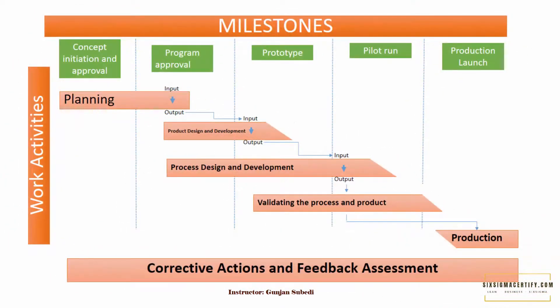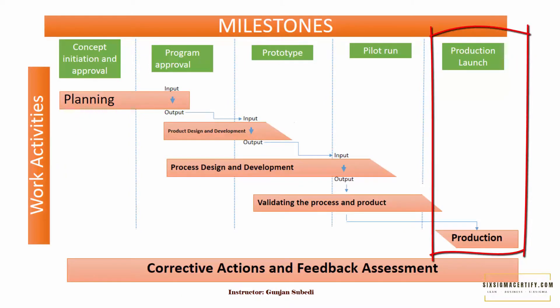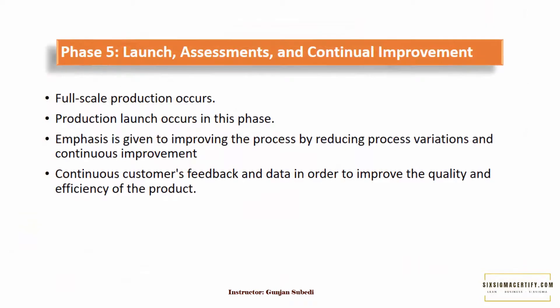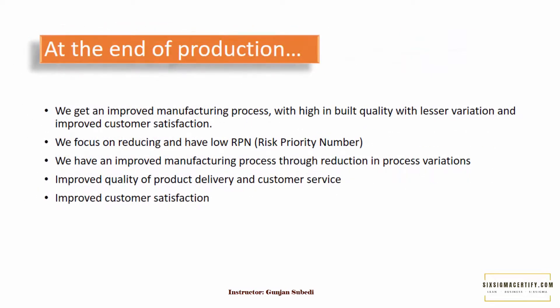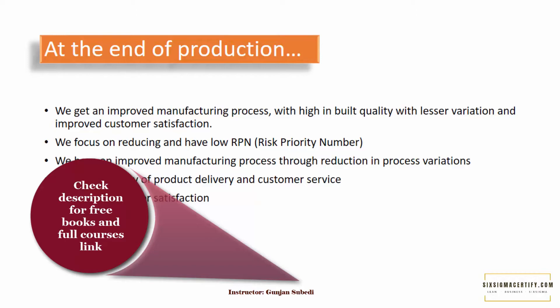Phase 5 is the phase for launch, assessments, and continuous improvement. After all activities are over, the full-scale production launch occurs in this phase. Emphasis is given to improving the process by reducing process variance and continuous improvement. We also give emphasis to collecting customer feedback and data in order to improve the quality and efficiency of the product. After completing this phase, we have an improved manufacturing process with high built-in quality, lesser variation, and improved customer satisfaction. The quality tools used include RPN (risk priority number) — focusing on reducing it — and the 8D problem-solving method for any problems to be improved in future products or processes.